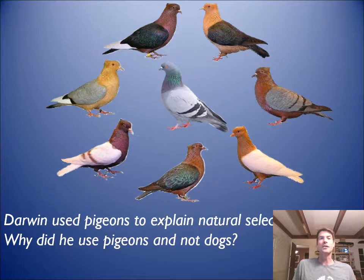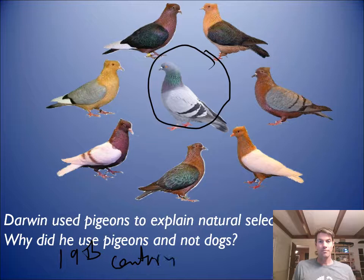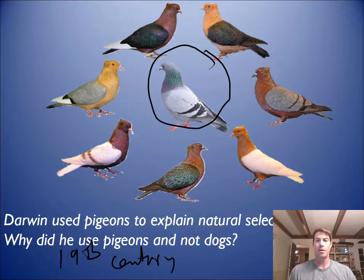So Darwin did not actually write about dogs — I'm talking a lot about dogs, but he talked about pigeons. Why did he use pigeons and not dogs? It's because pigeons were kind of like the dogs of the 19th century. Most people didn't have the space and money to take care of dogs. Dogs require having a house, a place to walk them, a lot of food. Pigeons you can have on a rooftop, and they're a little easier to take care of in 19th century England.